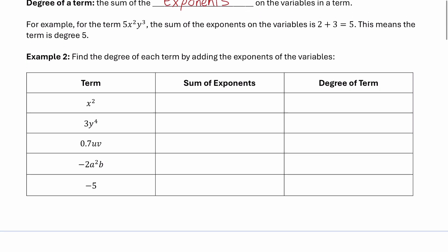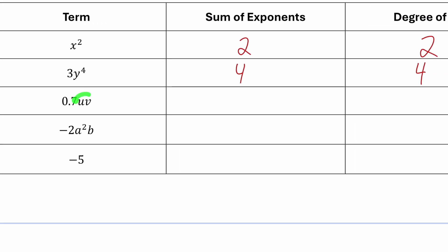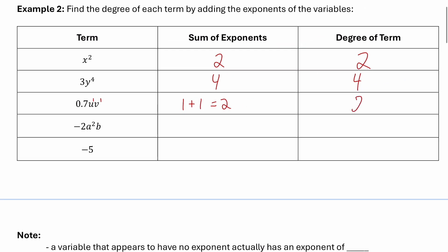Let's practice in example 2 finding the degree of each term. The first term, x squared, has one variable with exponent 2, so it is degree 2. The next term, 3y to the 4, has one variable with exponent 4, so it is degree 4. In the next term, there are two variables, u and v. When you don't see exponents on a variable, there are exponents of 1 on those variables. So the sum of the exponents is 1 plus 1, which equals 2 — meaning that term is degree 2.